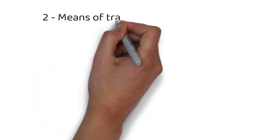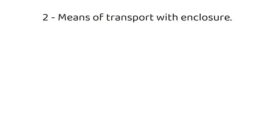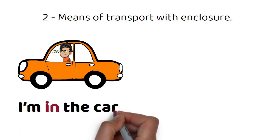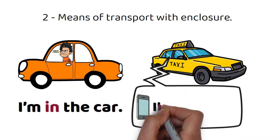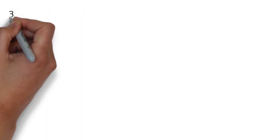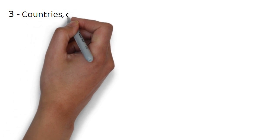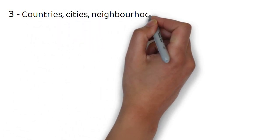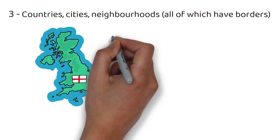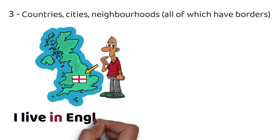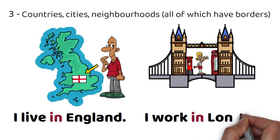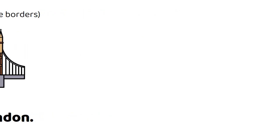Number two: means of transport with enclosure. For example, I'm in the car. I'm in a taxi. Number three: countries, cities, and neighbourhoods, all of which have borders. For example, I live in England. I work in London.